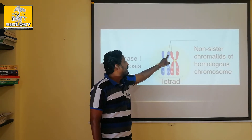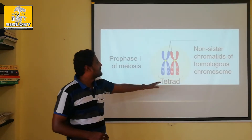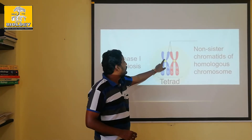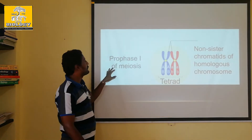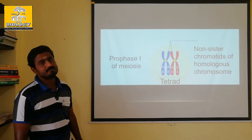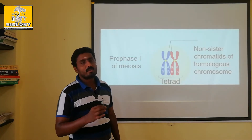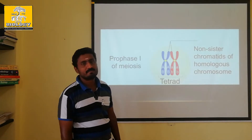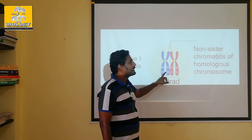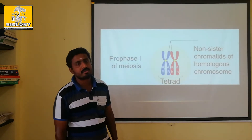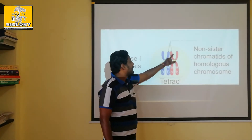Four chromatids — it is the feature. There are bivalent chromosomes and tetrads. There is a centromere and a chromatid. There is a chromatid called bivalent chromosomes. The chromosomes are very familiar with cell division. This is the tetrad form.